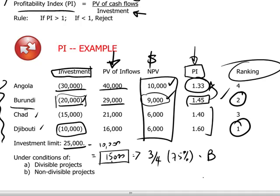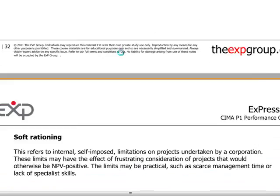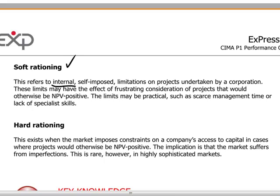We can also change the conditions and consider non-divisible projects — how would we find the optimal combination? Then we would have to test different combinations of these projects in the case of non-divisibility. In other words, we're talking about capital rationing here. The candidate needs to distinguish between soft rationing — basically internal, self-imposed limitations on projects that a company may impose — where the company may have access to capital but chooses not to proceed.